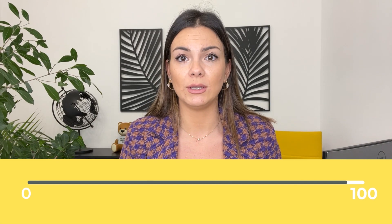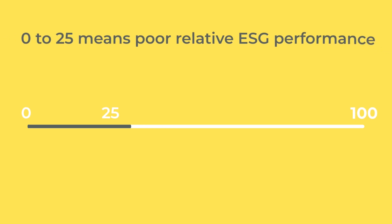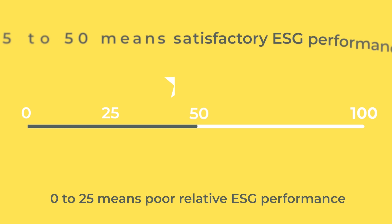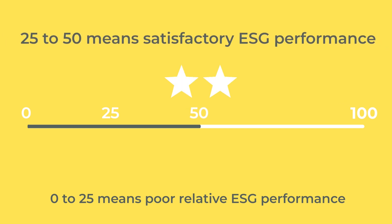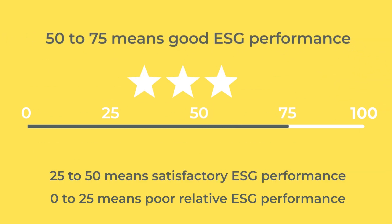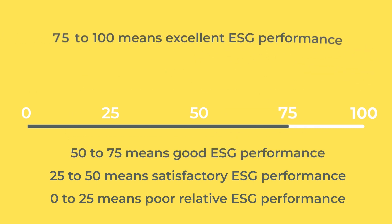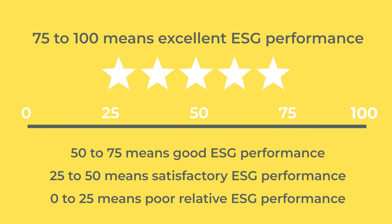The most widely used scale is from 0 to 100, where 0 to 25 means poor relative ESG performance, 25 to 50 means satisfactory ESG performance, 50 to 75 means good ESG performance, and 75 to 100 means excellent ESG performance. When an external consultant subjects the company to an assessment, they choose not only the scale of reference, but also what aspects to consider and focus on for that type of organization.